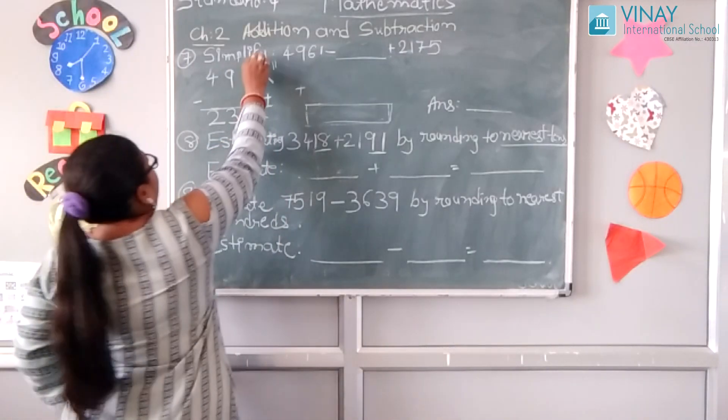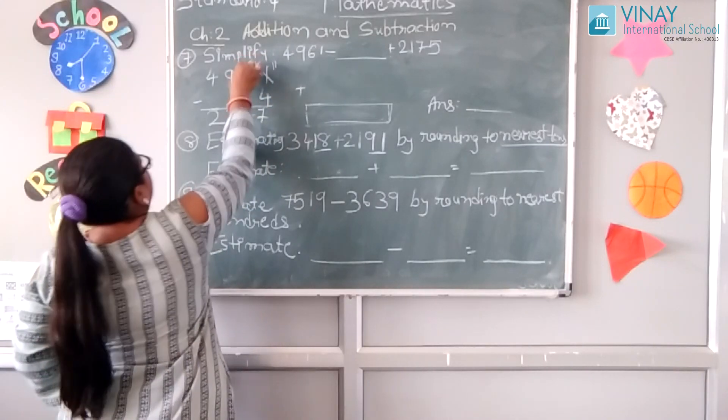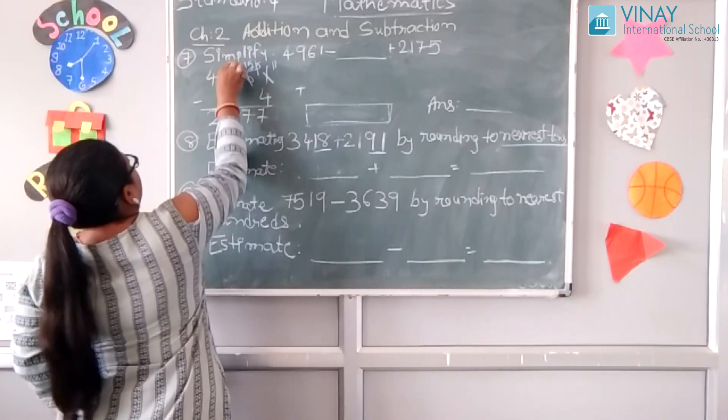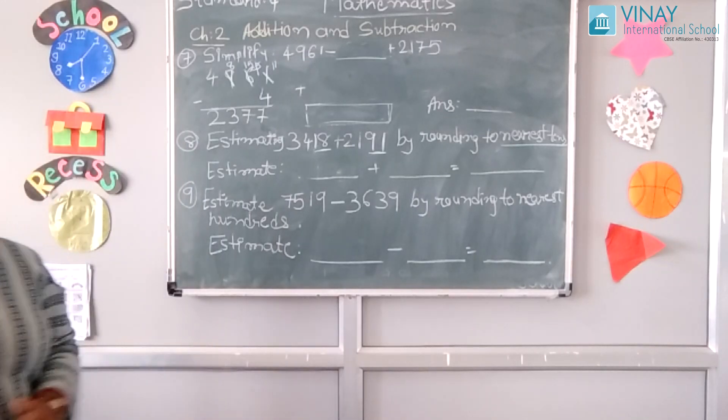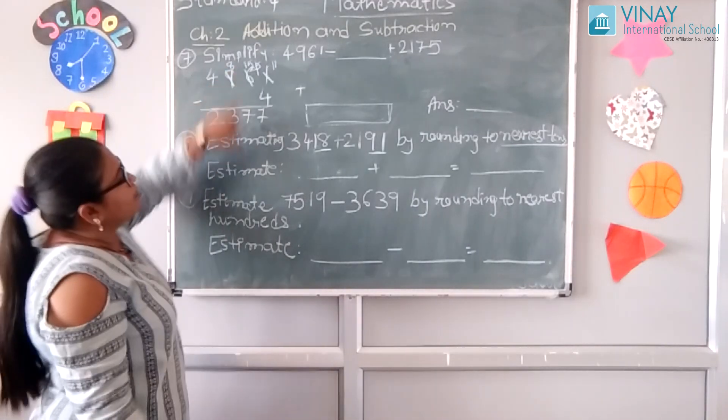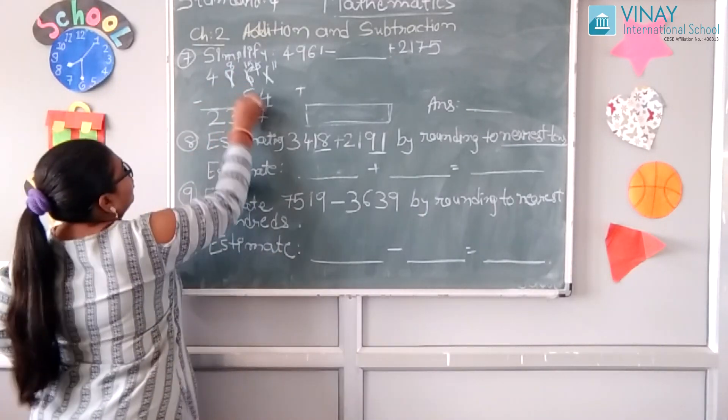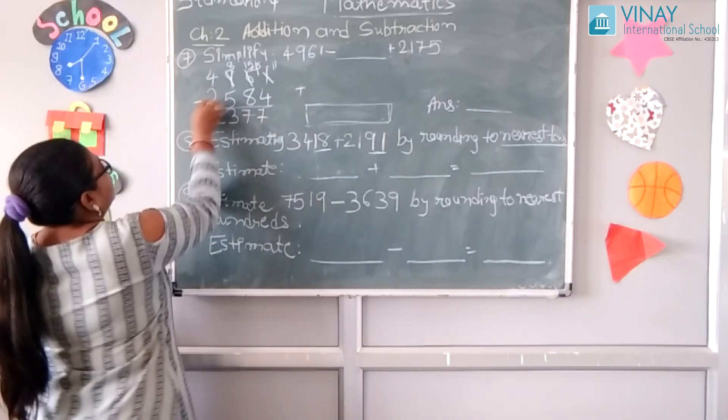5 minus 7 again not possible, 5 cut 15. 9 cut 8. 15 minus 7 will give us 8. 8 minus 2 will give us 6. So we can...